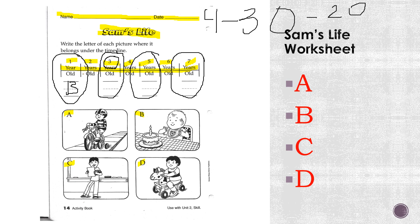The next one is three years old — which picture was taken of Sam at three years old? Write that letter on the line. Then five years old — which picture belongs there? And which picture belongs under seven years old? Fill in A, B, C, or D under the timeline. Once you're finished, you're all done with social studies for today. See you tomorrow — have a great afternoon!